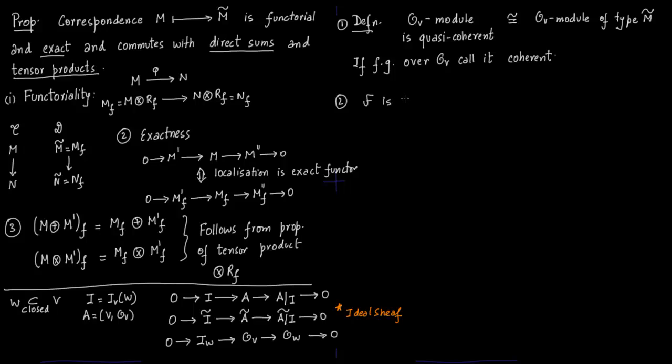Now an equivalent definition of quasi-coherent which actually makes much more sense to work with. F is a quasi-coherent O of V module if for every point in V - after all we are talking about O of V module - so if every point of V, there exists an open neighborhood U of P and an exact sequence of O of V modules.